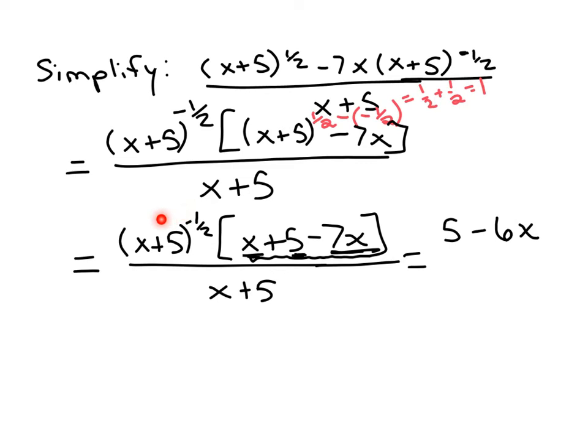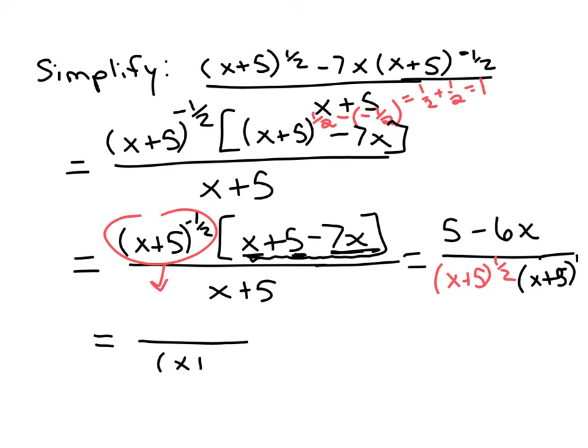Now, the negative exponent here, we should move that to the denominator. So when I move this down, I'll have x plus 5 to the positive one-half down here. And it's times that x plus 5 that we had initially, which is implied as x plus 5 to the first. So to get the overall exponent in the denominator, we should add the exponents. So we have a power of x plus 5, and to find that power, we should take the one-half plus one.